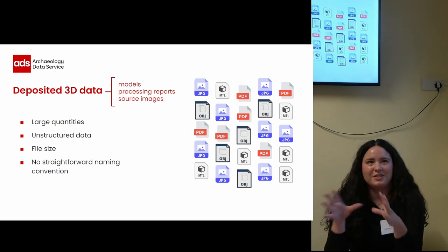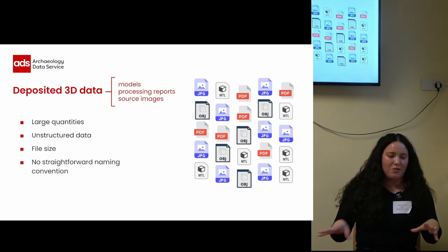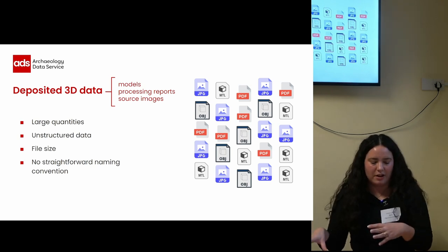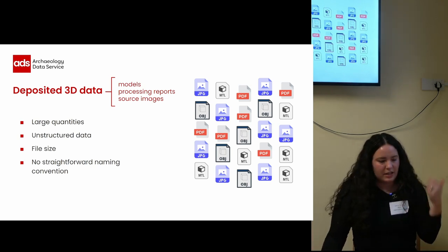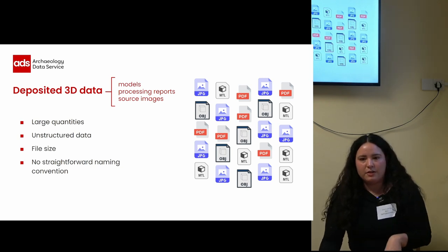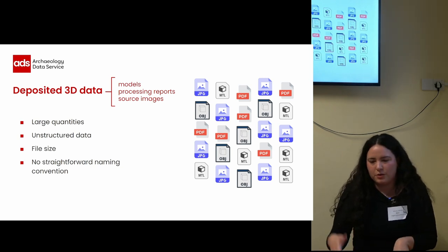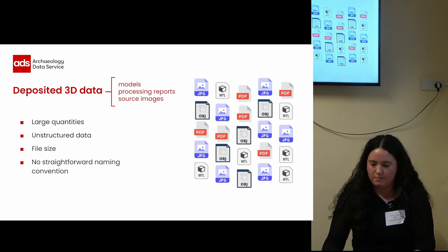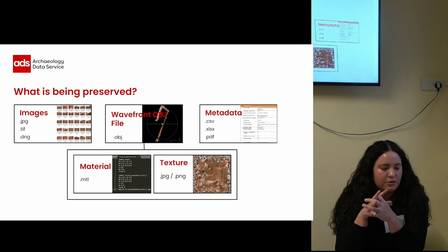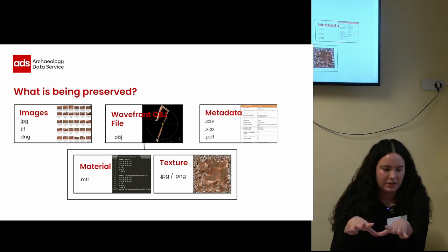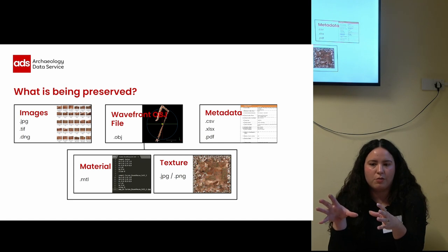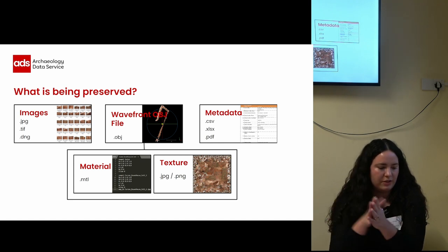So how do we start to make sense of what was deposited and what it would look like as part of the final archive? Well, at the ADS, the preferred file format for 3D models that come from photogrammetry is OBJ. OBJ is an open format that stores both geometry and texture, and it has open specifications, which is a big part of why it is suitable for preservation.